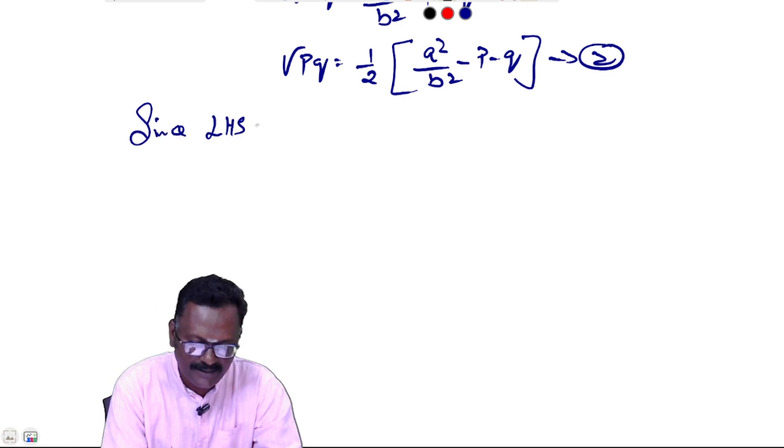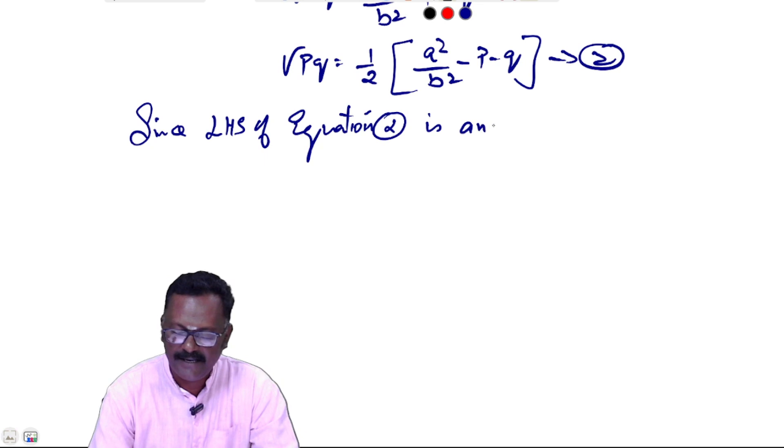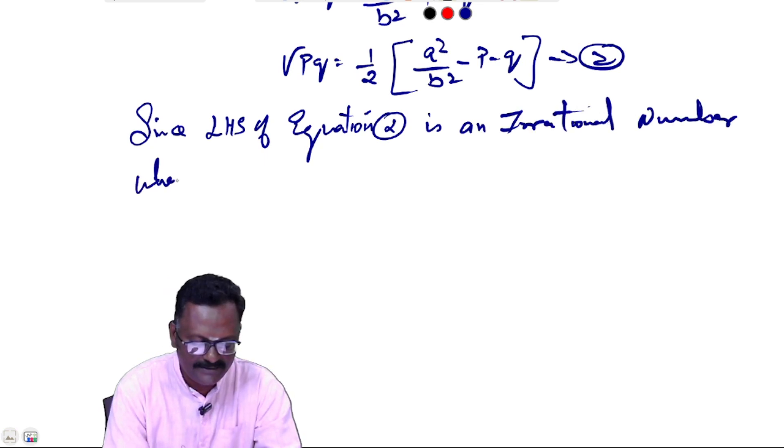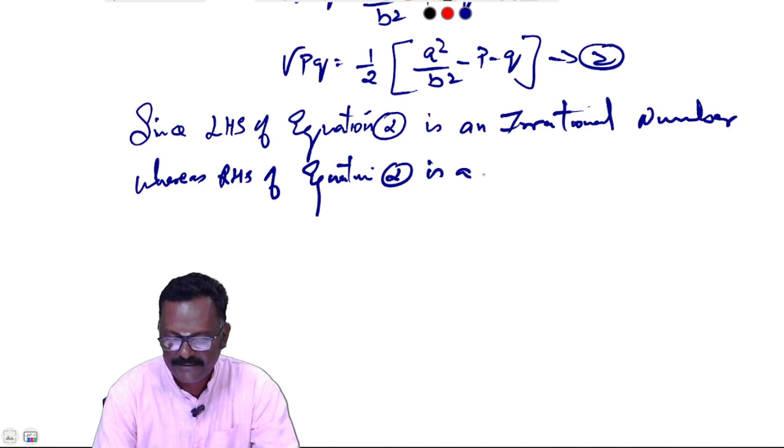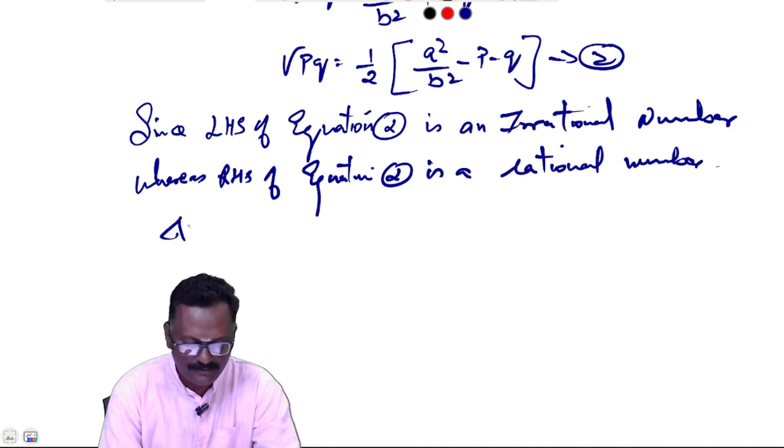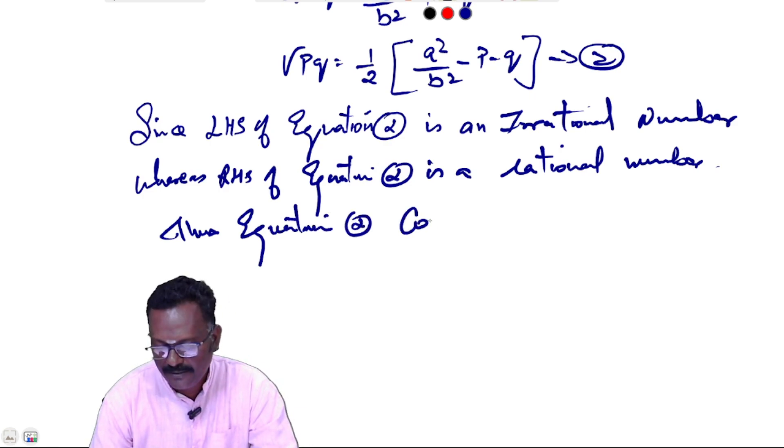Since the left hand side is an irrational number, whereas the right hand side of equation 2 is a rational number, thus equation 2 contradicts our assumption.